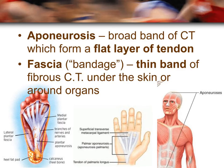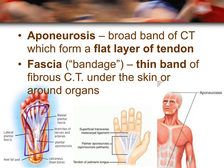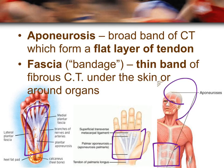Two other connective tissues to discuss are aponeurosis and fascia. Tendon, aponeurosis, and fascia mesh together and are hard to distinguish from one another. Aponeurosis is a flat, broad sheet of connective tissue that provides extra support and stabilization to muscle. Fascia is a bit thinner but made of the same dense connective tissue as tendon. They are found around the bottom of the foot, the hand, the abdominal region (the six-pack area), and the skull.